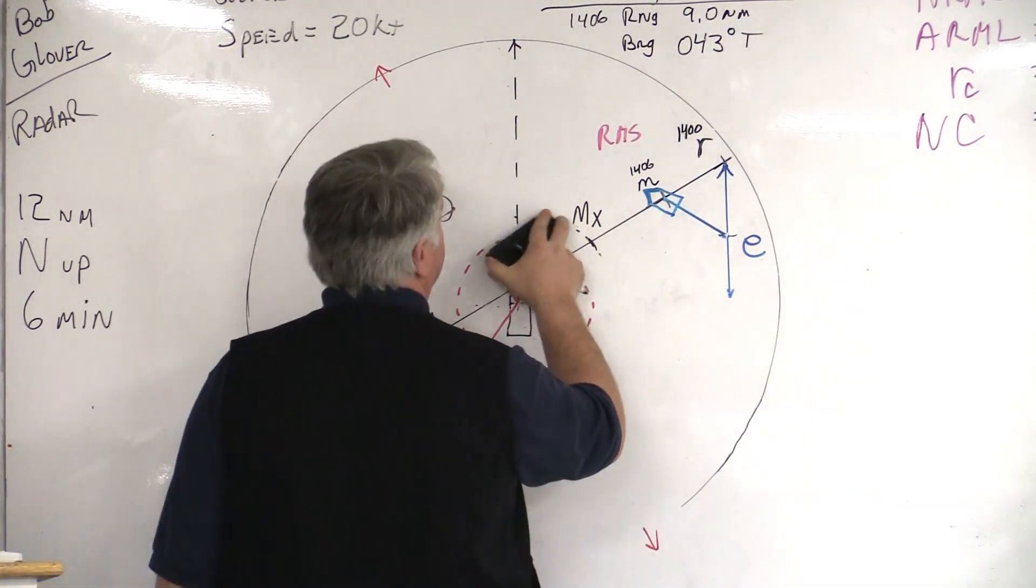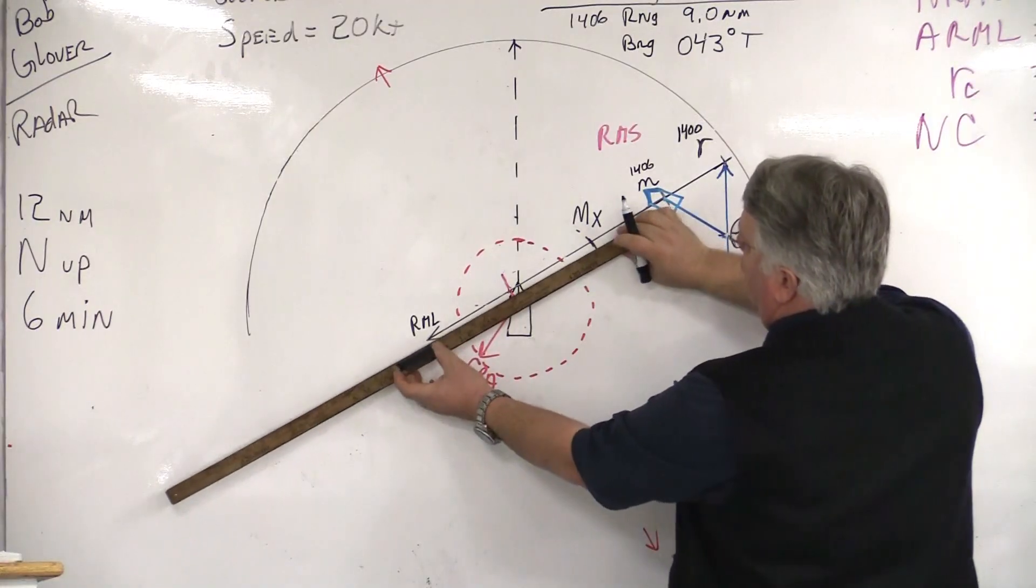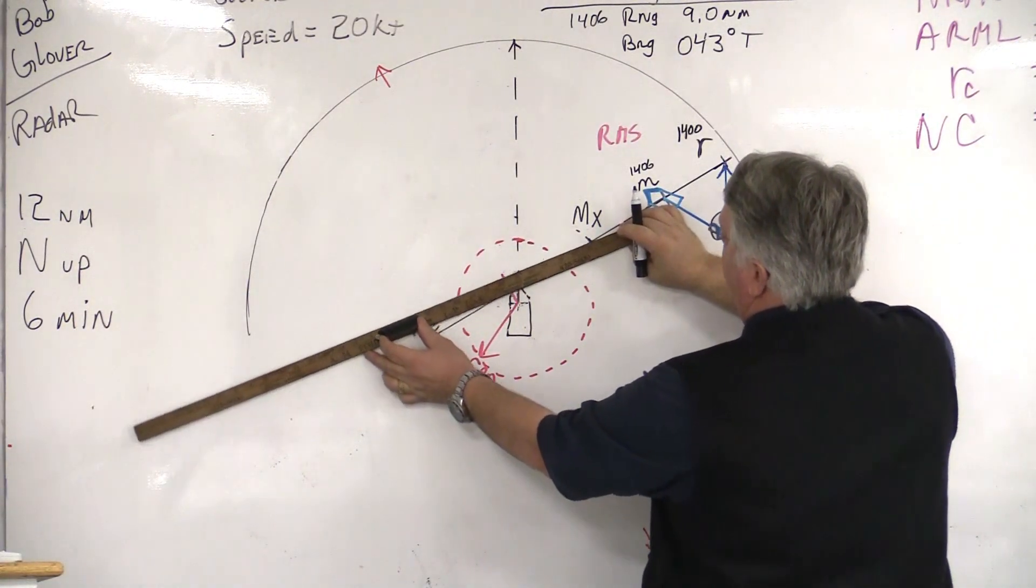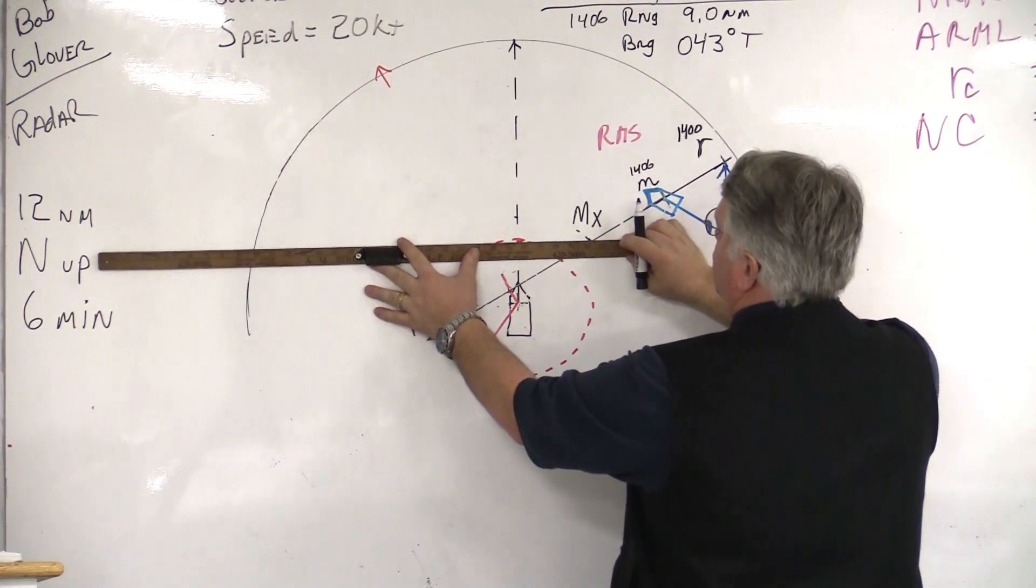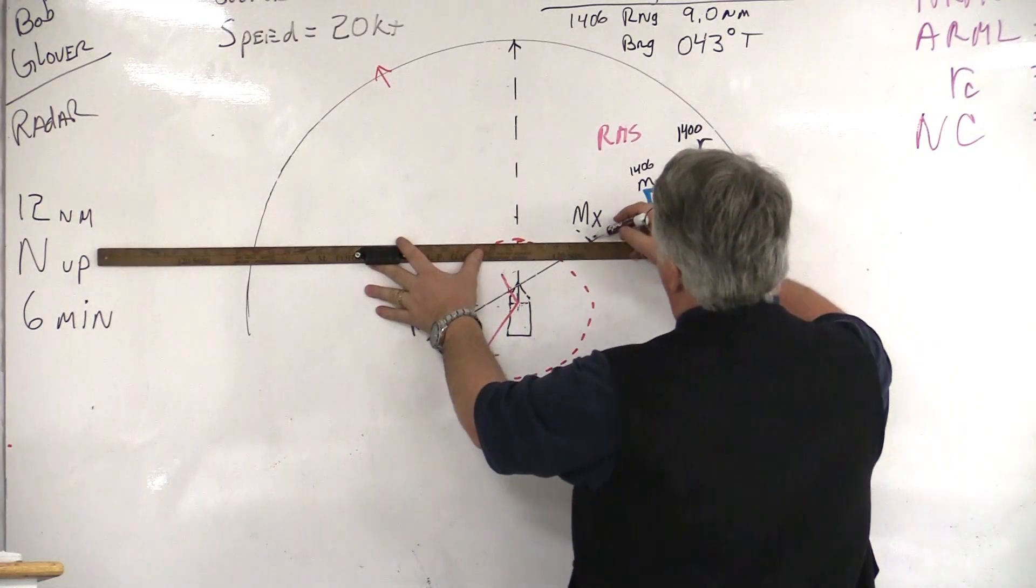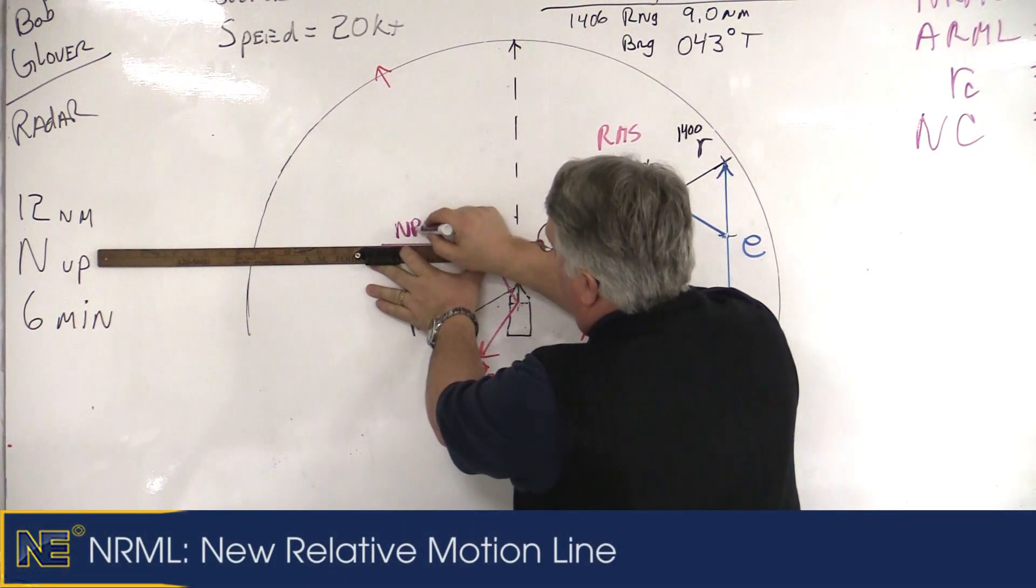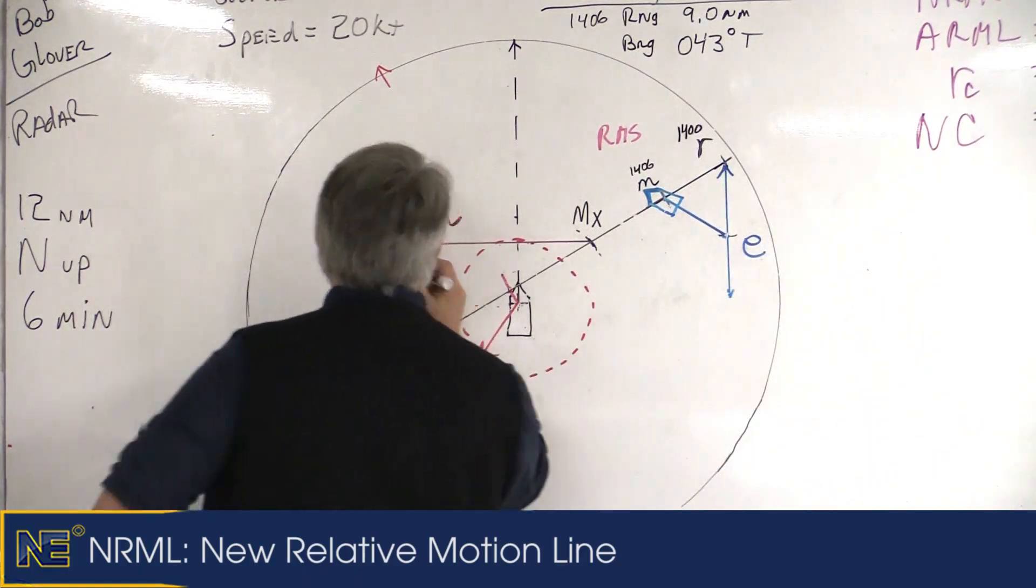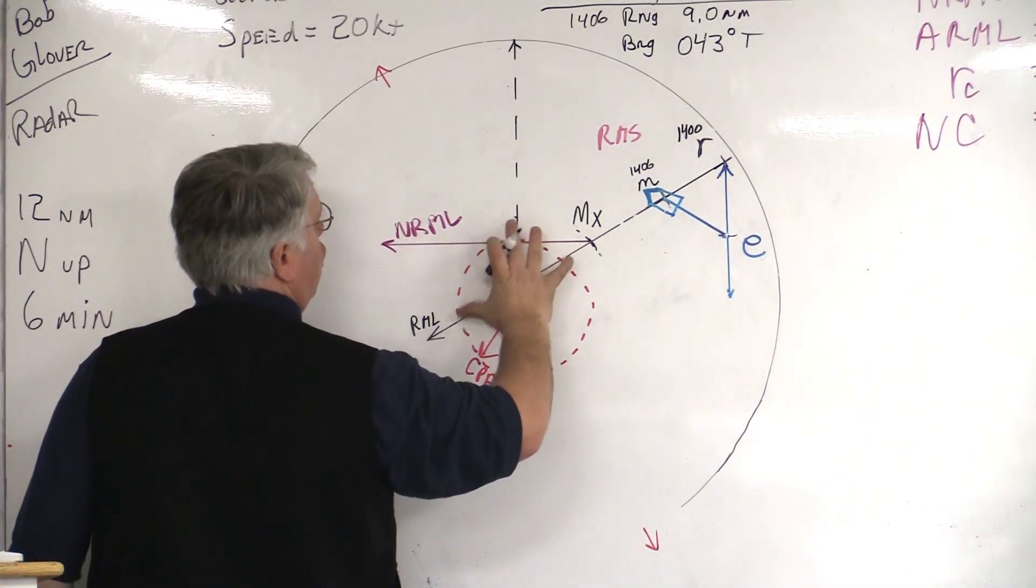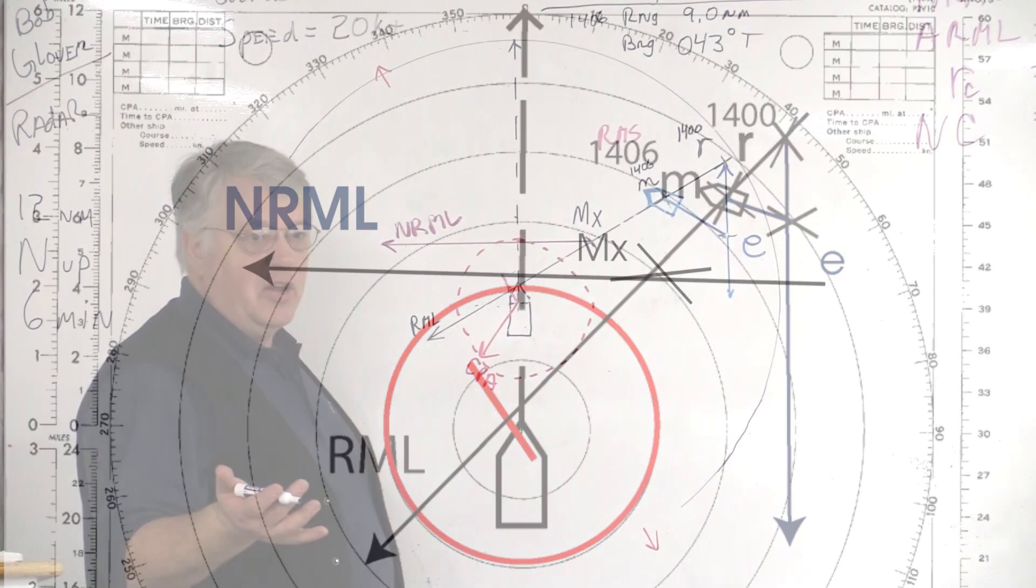So, what happens is that becomes our pivot point, and what we're going to do is basically this. We're going to take this relative motion line, and we're going to pivot it about MX, and we're going to make it so that it's just going to be tangent to, or touch, the new required CPA. So, I go ahead and take my pencil, and I draw in a line. This line is called the NRML, the new relative motion line. And, as you can see, all I've done is taken this old relative motion line, and I've pivoted it about the point of MX, and redrawn it so it's just tangent to my required CPA, whatever that may be. And, again, that may come from the captain, or the standing orders, or the company.